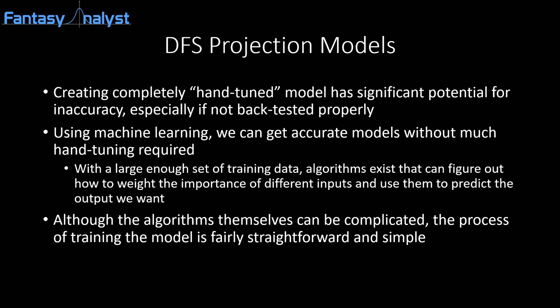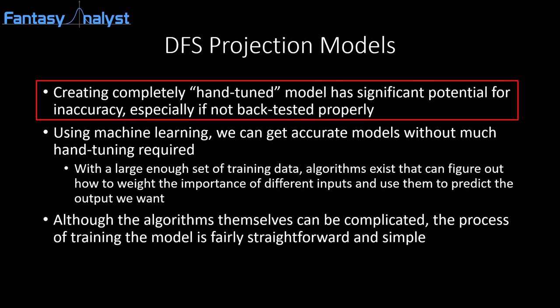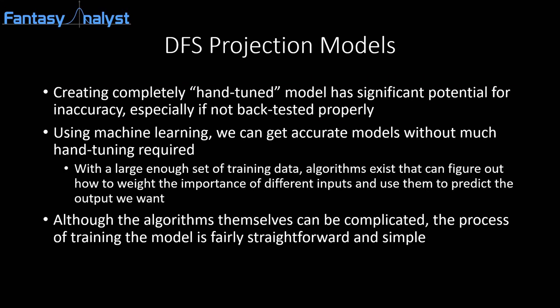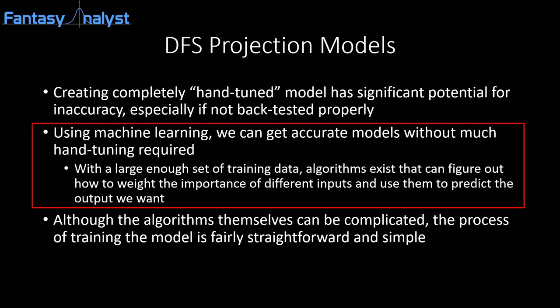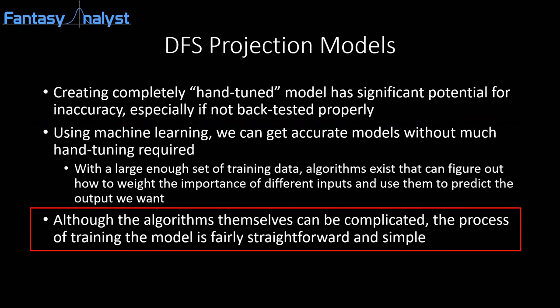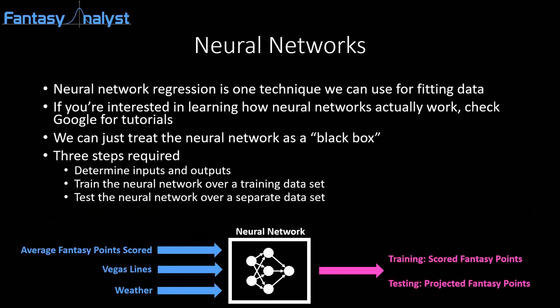When discussing how to create projection models for DFS, many people describe methods that involve creating and tuning these models by hand. The problem with this is that hand-tuned models can potentially be inaccurate, especially if not back-tested properly. However, there are better options available that make the task of creating DFS projection models significantly easier and more accurate. Specifically, machine learning techniques such as neural networks can easily take in lots of data and find an accurate way to predict the outputs we want automatically without much hand-tuning.